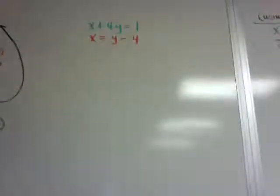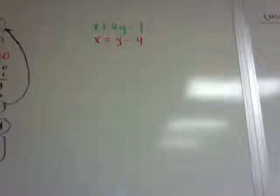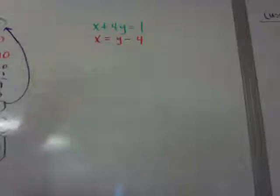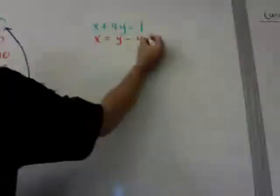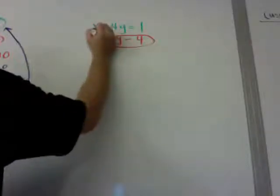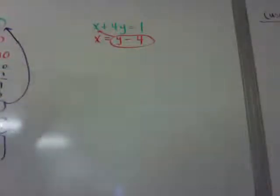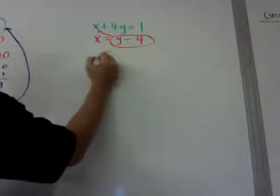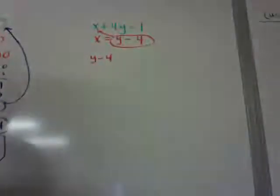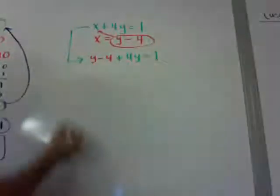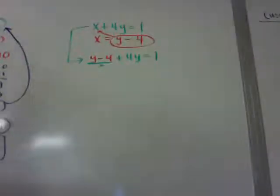Here's a third example. You can see you don't have to substitute the y's. In this case, since I have x equals something already, I can just take that x and put it into the equation up there. I'm showing you that you don't always have to go to the bottom equation and you don't always have to do the y. If they give it to you as x equals already, just substitute that in. So on the top, I would have y minus 4 instead of the x, plus 4y is equal to 1. Instead of x, I put y minus 4. That's substitution.